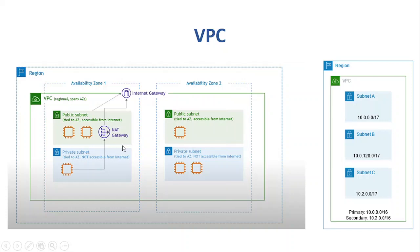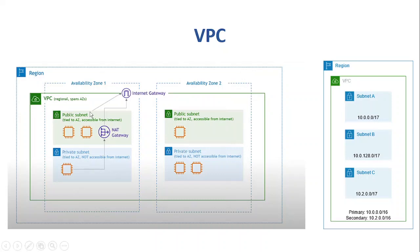The next thing we're looking at is the internet gateway. An internet gateway enables communication between our VPC and the internet. As you can see in the diagram, the internet gateway is connected only to the public subnet — because we don't want our private subnet to communicate with the public internet. So communication between the VPC and internet is for the public subnet only.